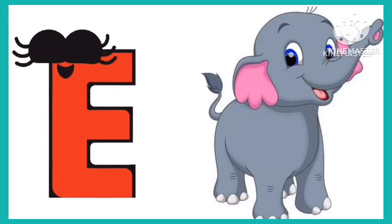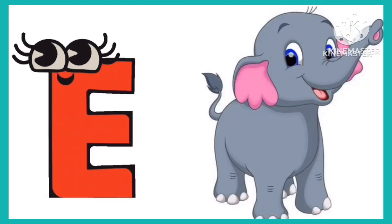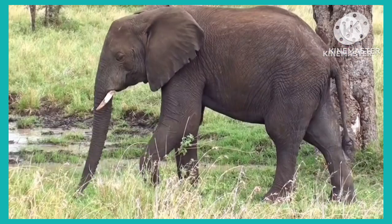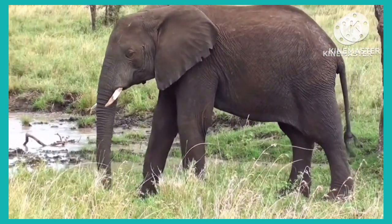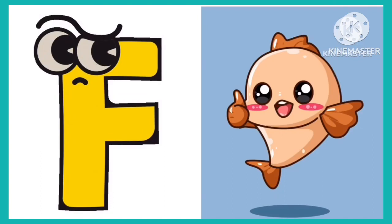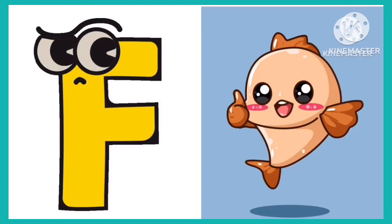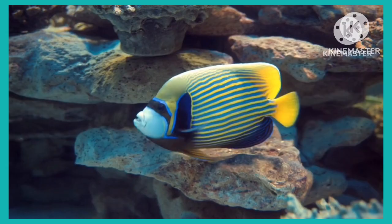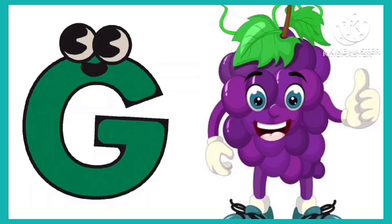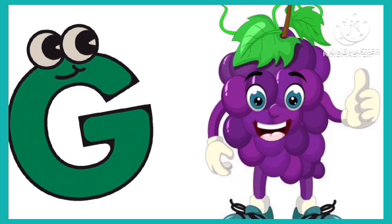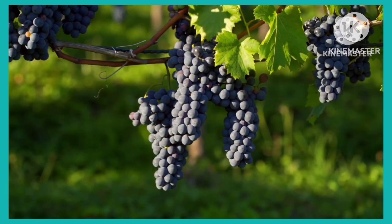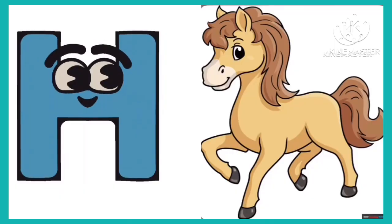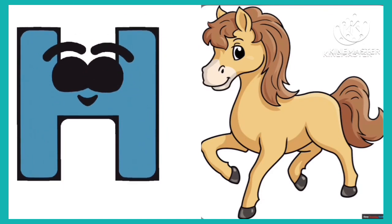E is for Elephant. F is for Fish. G is for Grapes. H is for Horse.